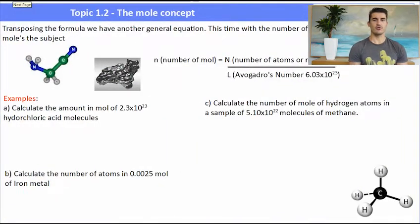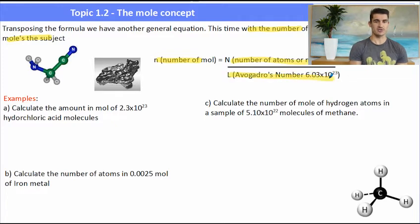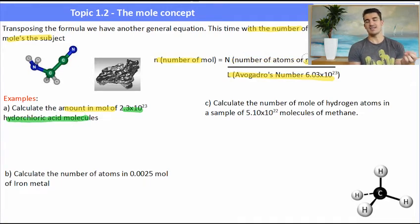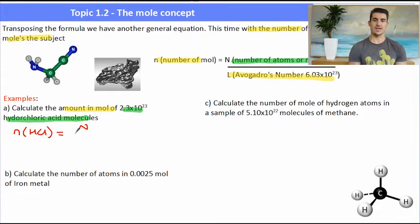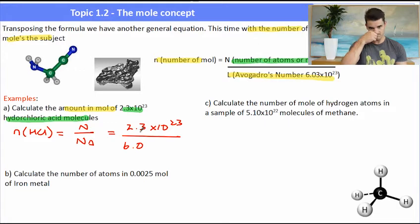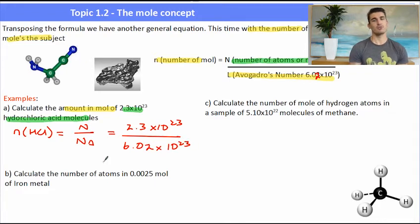This time we've transposed the formula to give a different equation with the number of moles as the subject. If we need to calculate the number of moles, we do the number of atoms or ions divided by Avogadro's number. Calculate the amount in mole of 2.3 times 10 to the 23 hydrochloric acid molecules. They've given us big N, so n(HCl) = N ÷ Nₐ = (2.3 × 10²³) ÷ (6.02 × 10²³). My number of molecules had two significant figures, so the answer is 0.38 mole.